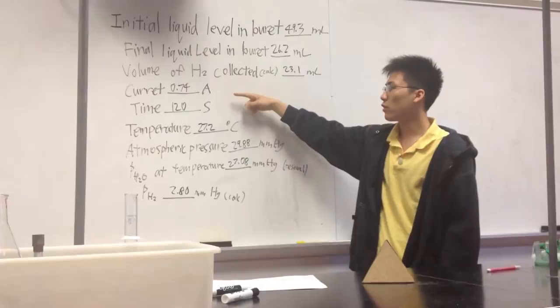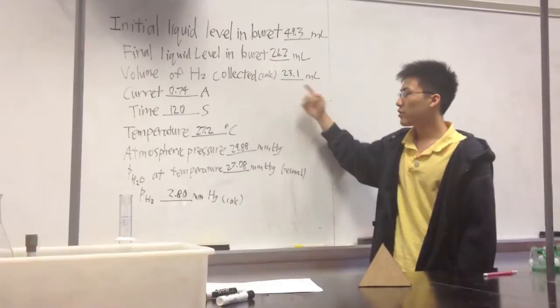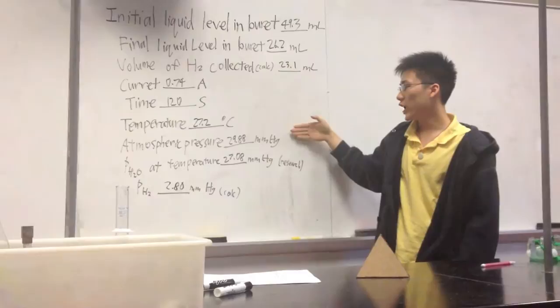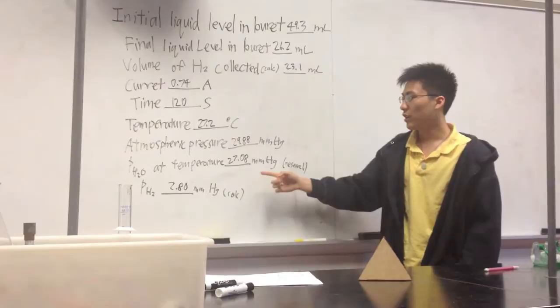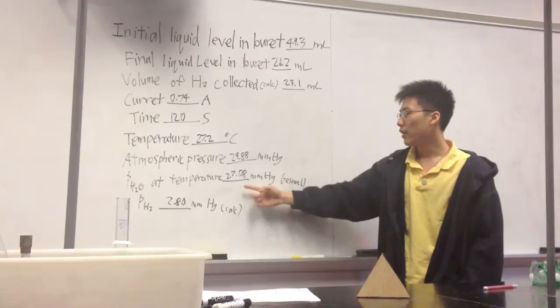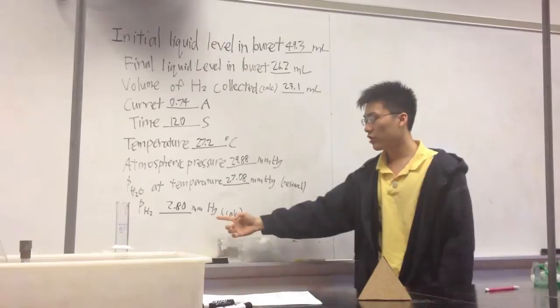But here we have the current and you measured that during the experiment. Here we have the time that we ran the timer for. So this is how long the experiment took. We have the temperature, and that's our temperature given. You find it during the lab. Here we have the atmospheric pressure and you either look it up or are given it. Here we have the pressure of H2O at that temperature and you look this up by plugging your given temperature into the internet. Here we have the pressure of H2 at that temperature which we find by subtracting the pressure of H2O at that temperature from the atmospheric pressure, giving the only remaining pressure.